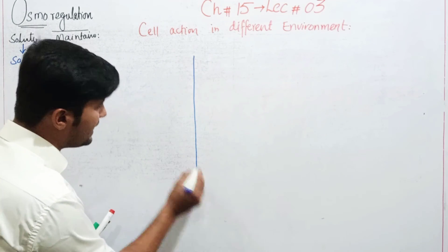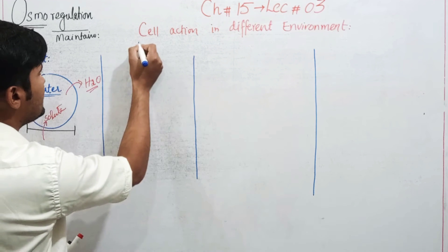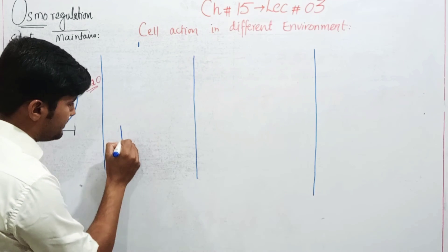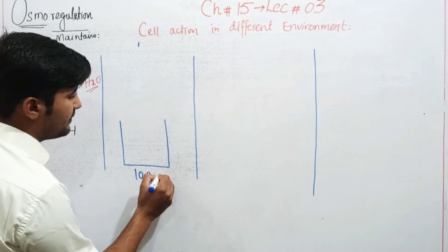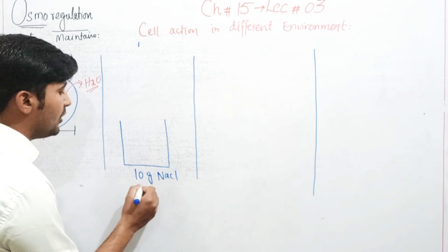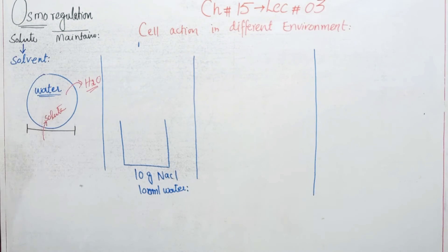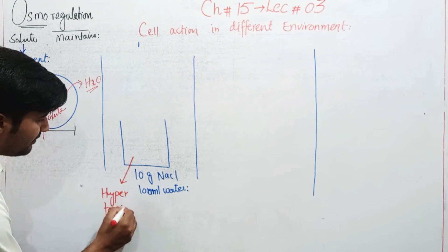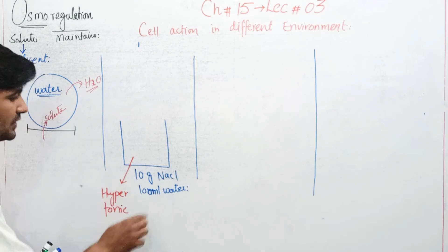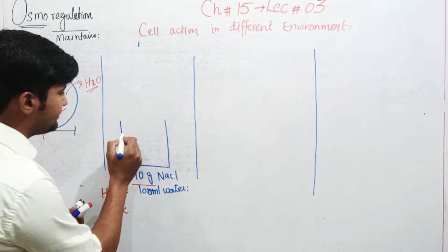پہلا environment: میں نے ایک بیکر لیا اور اس کے اندر 10 gram NaCl ڈال دیا، 100 ml water کے اندر۔ تو یہ جو solution بنے گا یہ hypertonic بنے گا۔ Hyper کا مطلب ہے زیادہ - یعنی ایسا solution جس کے اندر solute کی concentration زیادہ ہو۔ 10 gram NaCl ہے 100 ml water میں، اس وجہ سے ہم اس کو hypertonic solution بولتے ہیں۔